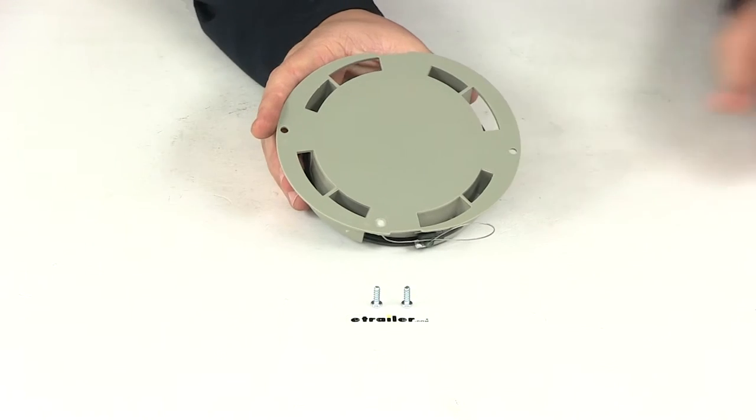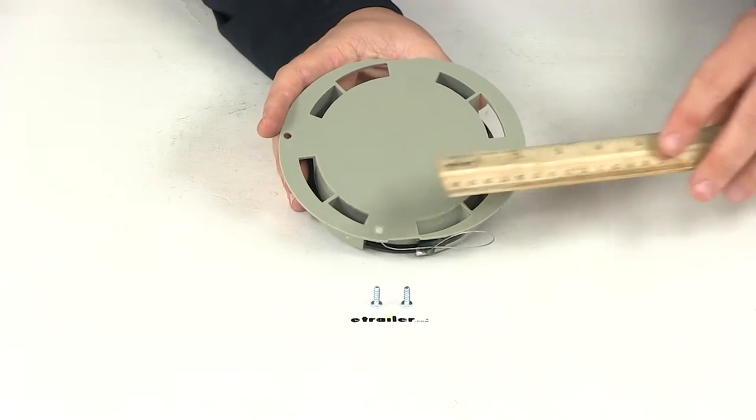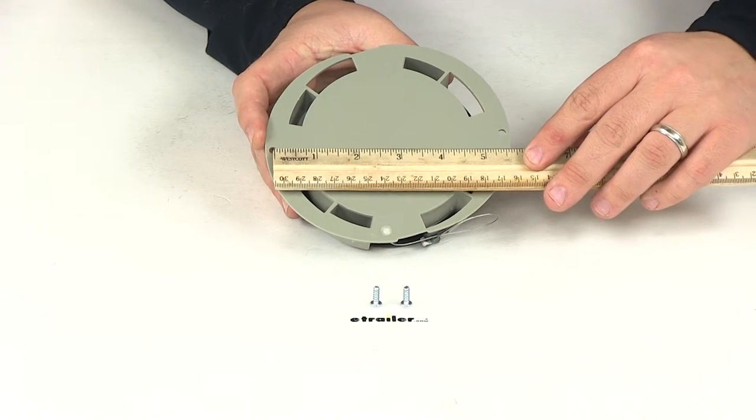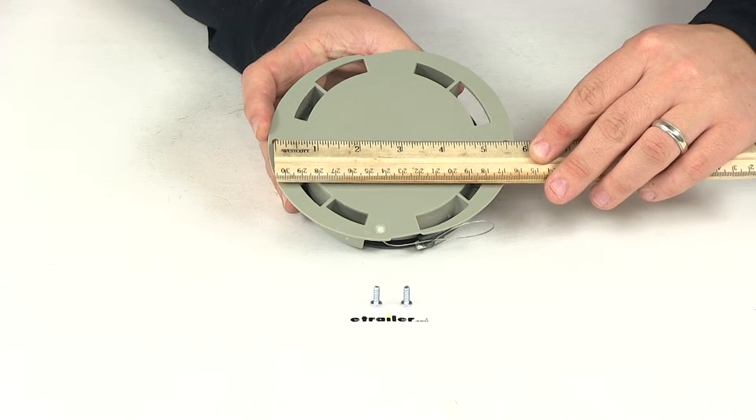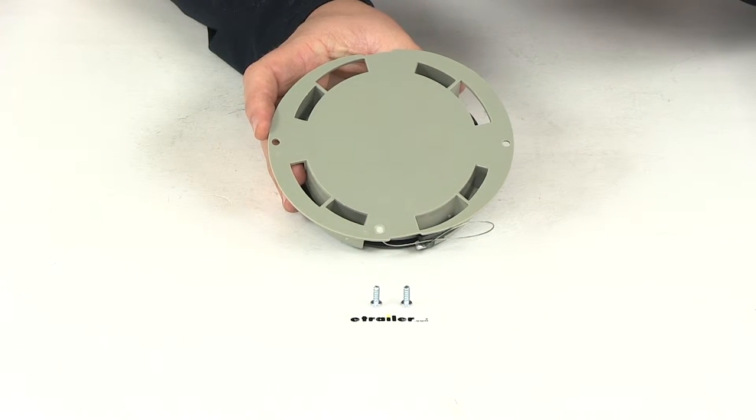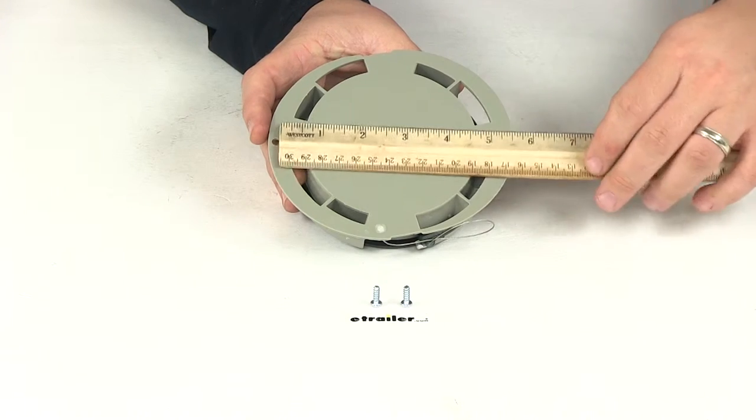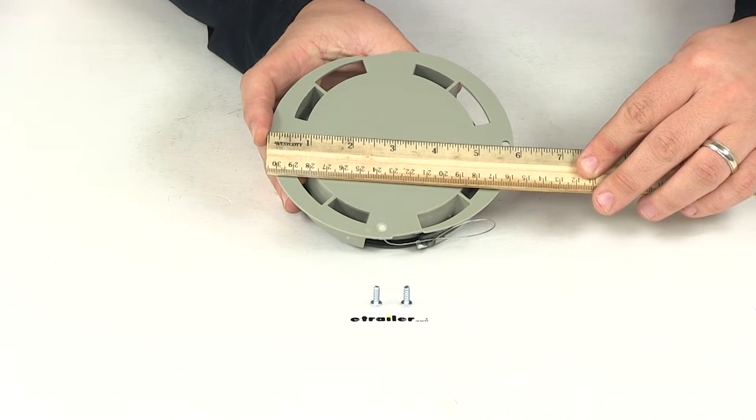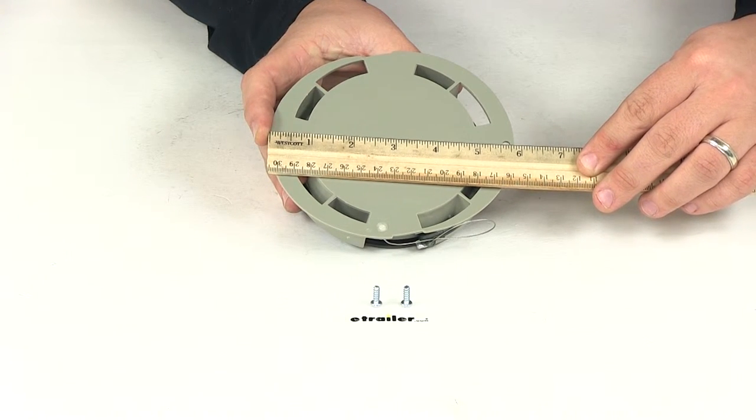If we take a measurement of the distance between the two mount locations center on center, that's going to give us a measurement of five and a half inches. The overall width from the mounting hole side, outside edge to outside edge, is going to give us a measurement of five and fifteen sixteenths of an inch.